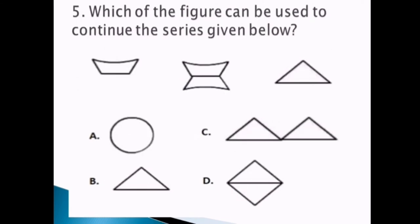Number five. Which of the figure can be used to continue the series given below? We have three figures in this problem. First figure, we have trapezoid. The second figure have a mirror of a trapezoid. Third figure is a triangle. Then, what would be the fourth figure? Okay. It should be triangle with mirror. So what's the answer? Is it A, B, C or D? The answer is letter D.